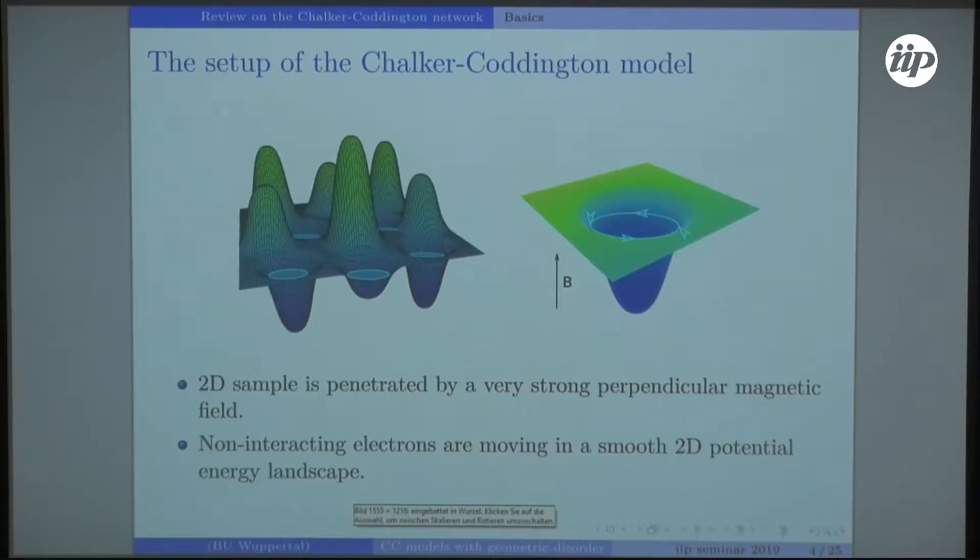Chalker and Coddington in the late 80s introduced a network model to examine this transition. It's a quasi-classical model where they consider an electron moving in a random potential landscape, traveling in hills around hills and valleys.